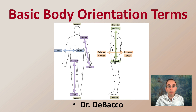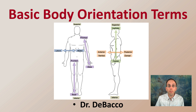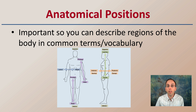Welcome to this video on the basic body orientation terms. While this might seem pretty simplistic, it is important to understand some of these terms and vocabulary, because if you're generating a report or reading an autopsy, these are the terms that are going to be used. These anatomical positions are used to describe regions of the body in common terms and vocabulary, and this is how scientists can communicate easily with one another so that everyone has the same mental image and everyone's on the same page.